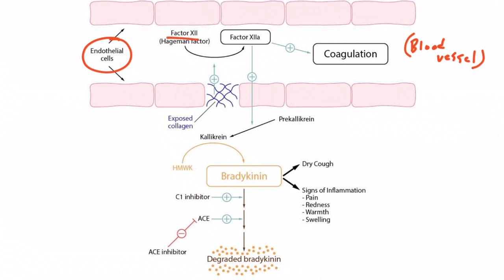The first protein is factor XII, also known as Hageman factor. The second protein is prekallikrein. And third is high molecular weight kininogen. It's these three substances that will get acted on during acute inflammation and lead to a cascade of events, which we describe as the kinin system.